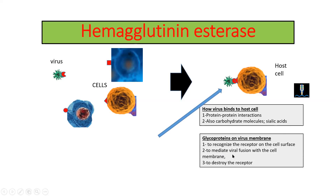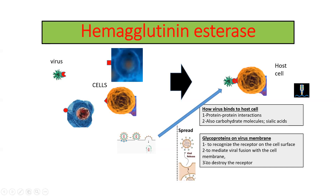Second, to mediate membrane fusion with the cell. When the virus comes and recognizes the receptor with its glycoprotein, its membrane is fused with the host cell membrane, and through this fusion the genomic RNA enters into the cell — this is also a duty of glycoproteins. Third, to destroy the receptor. After the virus has utilized the cell and when the cell is about to die, viruses are released from the cell by destroying the receptor that was used to enter the cell initially.